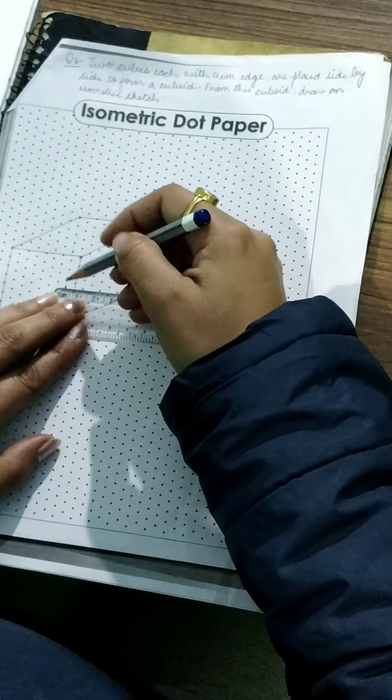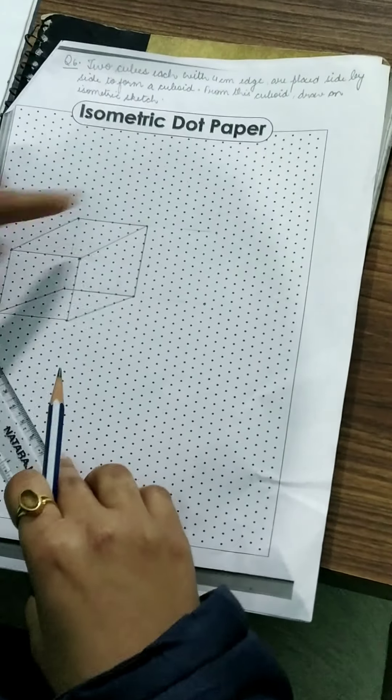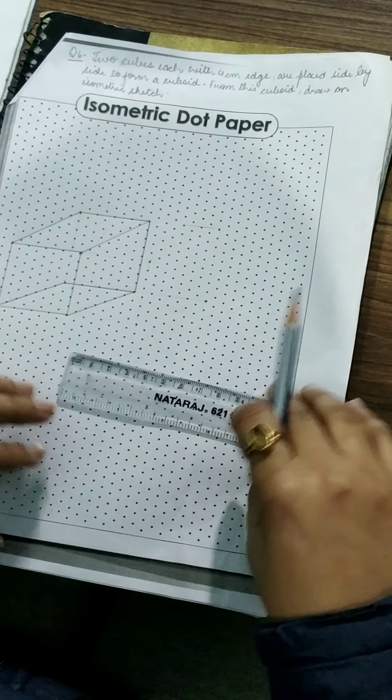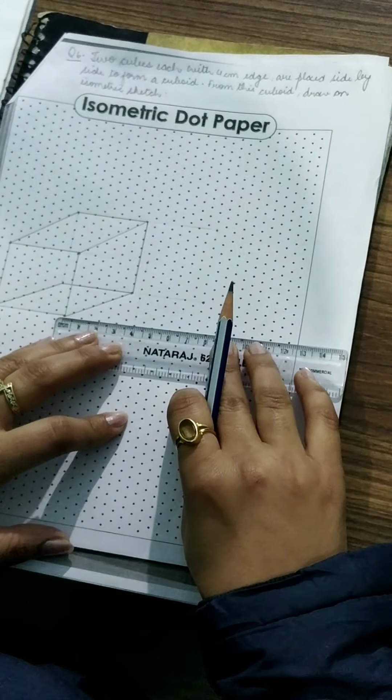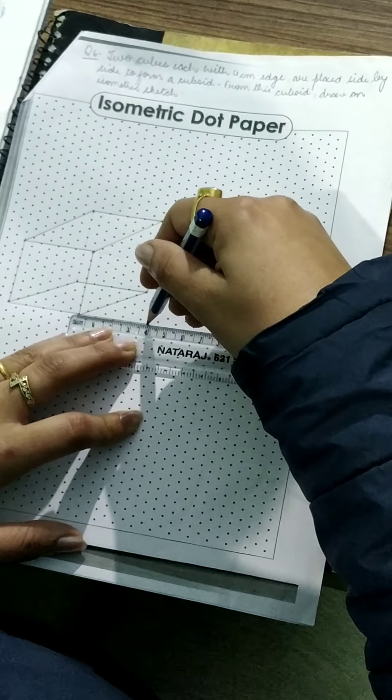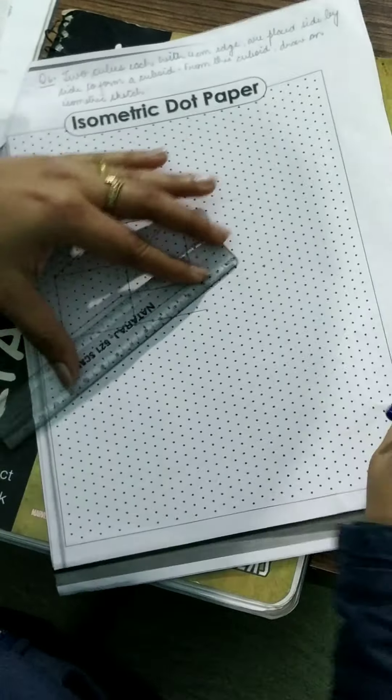Now children, by this cube, after making this cube, children again you have to draw a 4 cm line for making a cuboid. So 4 cm, again this 4 cm.